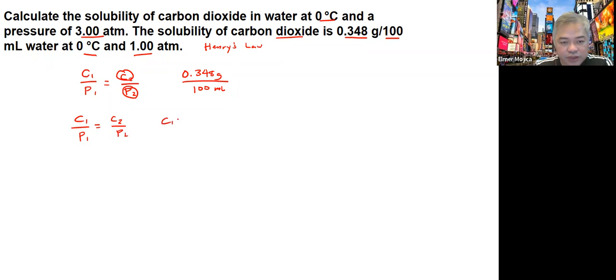So c1 times p2 equals c2 times p1. Since we are determining c2, we get c2 equals c1 times p2 divided by p1. What we have here is 0.348 grams over 100 mL...